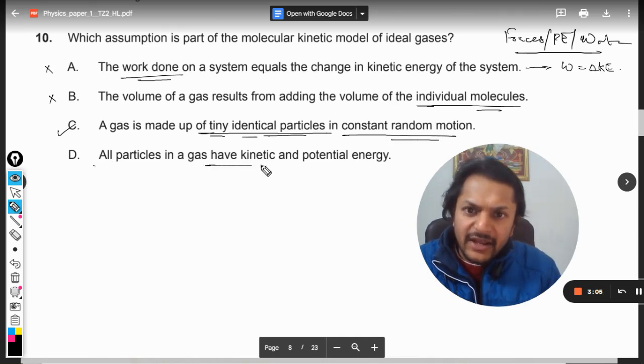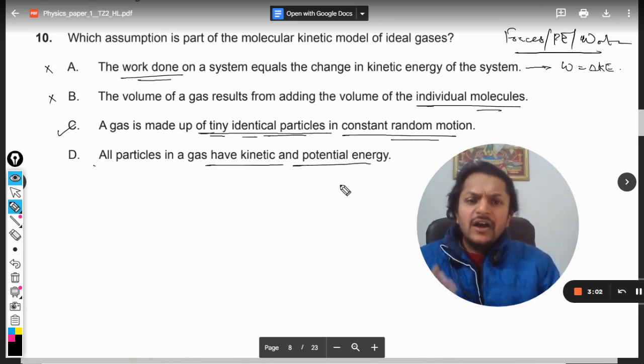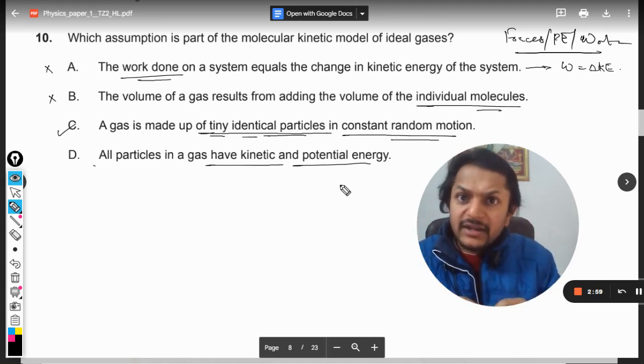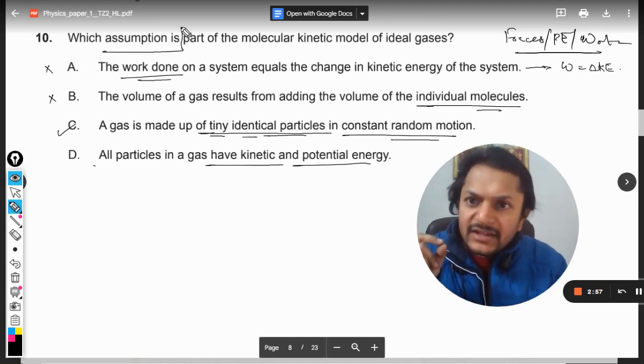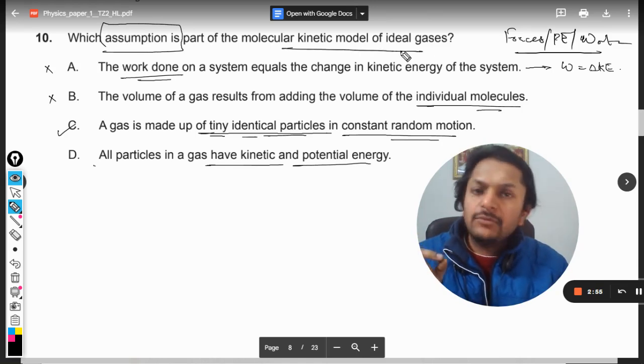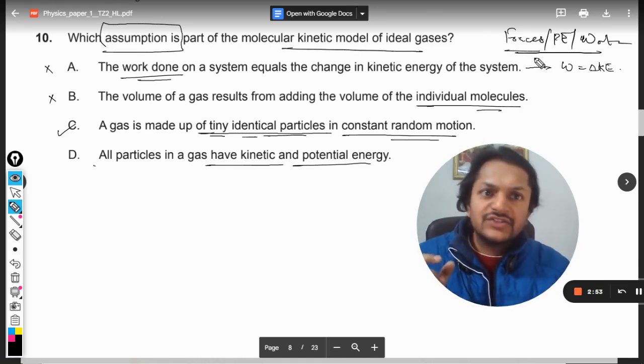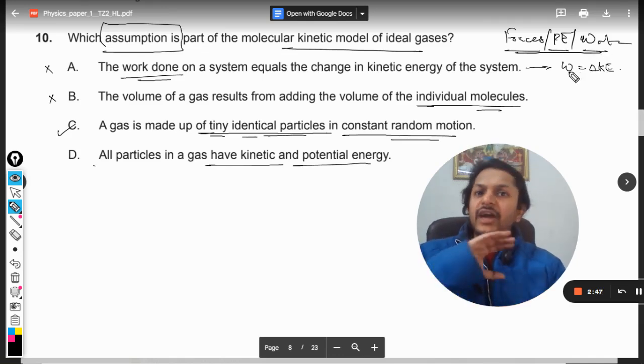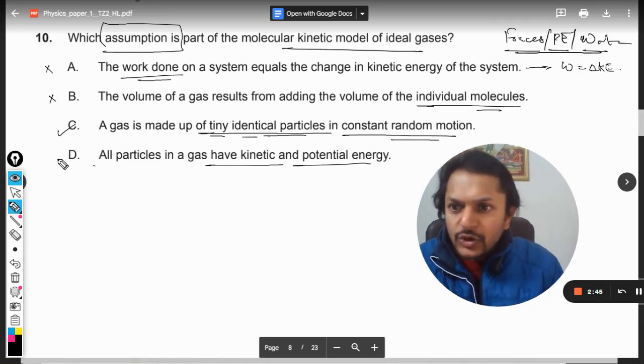Option D: all particles in a gas have kinetic as well as potential energy. Well, technically speaking this is again a true statement, but we make an assumption for the kinetic model of gas that we are not considering intermolecular forces, and hence we do not consider the potential energies. Hence we do not consider any work that was done, so option D will be wrong.